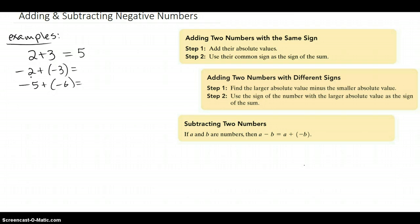That works for all numbers, including negatives when you add them. Negative 2 plus negative 3. We're going to add the absolute values, which are 2 and 3. 2 plus 3 is 5, and we're going to use their common sign, which is negative 5.